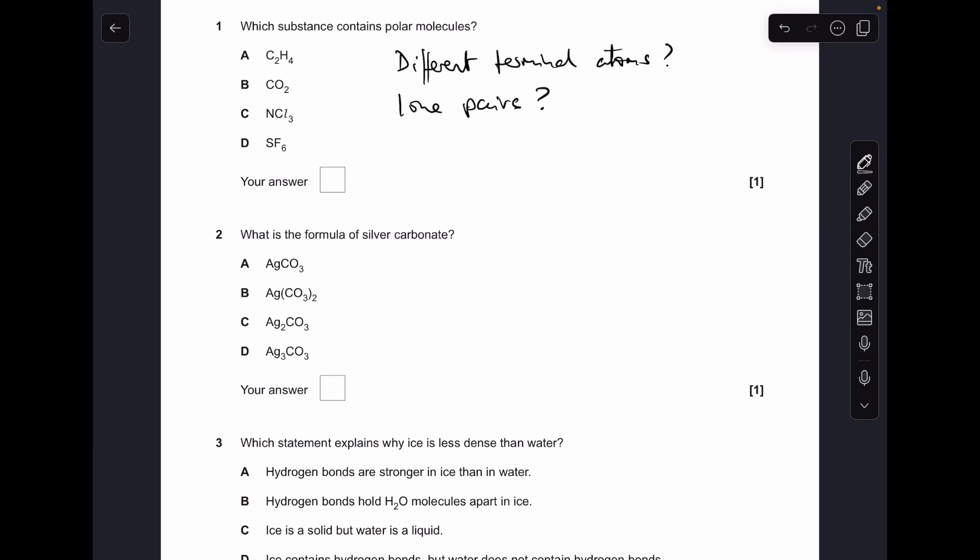Okay, so let's make a start. Question one asks: have we got different terminal atoms in the molecule? The answer is no, because in the first one it's all hydrogen around the outside, oxygen in B, chlorine in C, fluorine in D. Next question is: have we got any lone pairs on the central atom? We have on the nitrogen, because nitrogen is in group five, which is only making three bonds to those three chlorines, so there's a lone pair in NCl3. That'll make the molecule polar, so the answer was C.